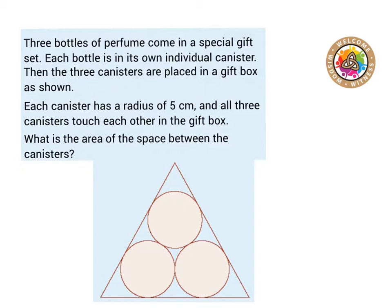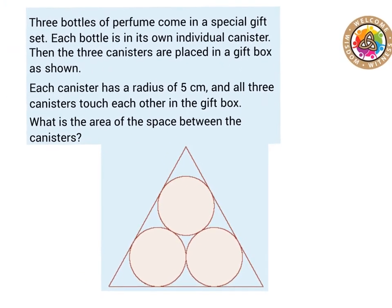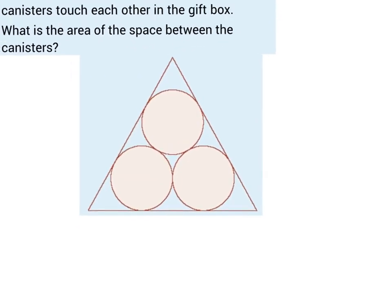We're given this question: three bottles of perfume come in a special gift set. Each bottle is in its own individual canister, then the three canisters are placed into a gift box as shown. Each canister has a radius of five centimetres and all three canisters touch each other. What is the area of the space between the canisters?